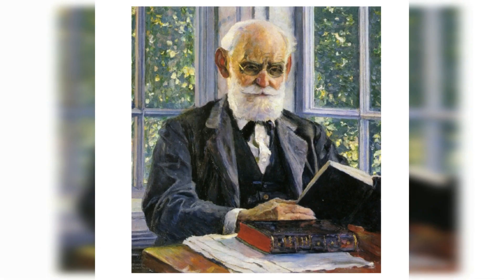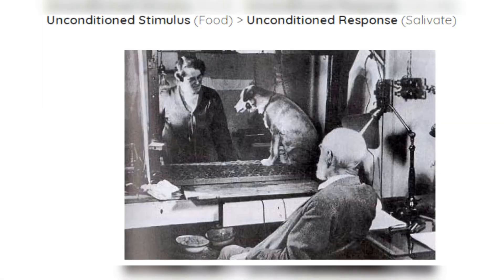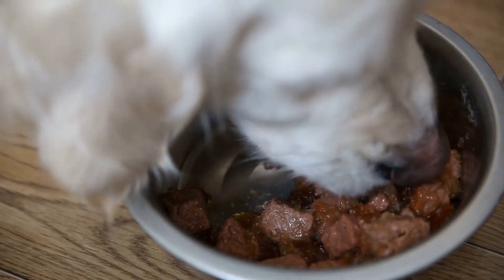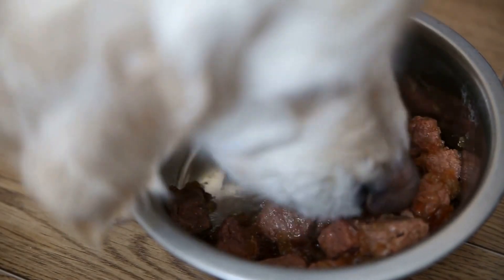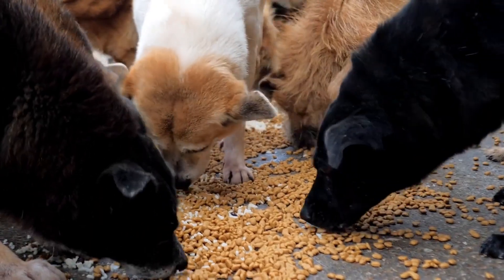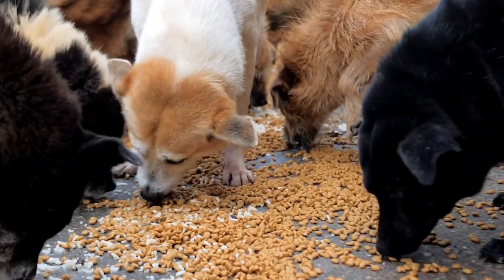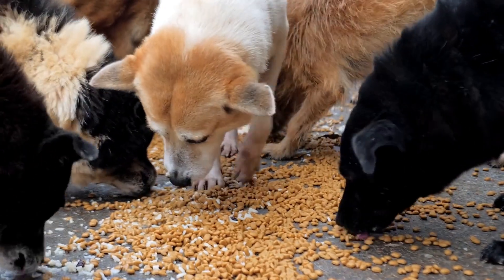Classical conditioning was first studied and documented by Ivan Pavlov, a Russian physiologist, in the late 19th century. Pavlov was interested in studying the digestive system of dogs and was originally studying their salivary reflex. However, he noticed that the dogs began to salivate even before they were given food. He realized that the dogs had learned to associate certain stimuli with the presentation of food.